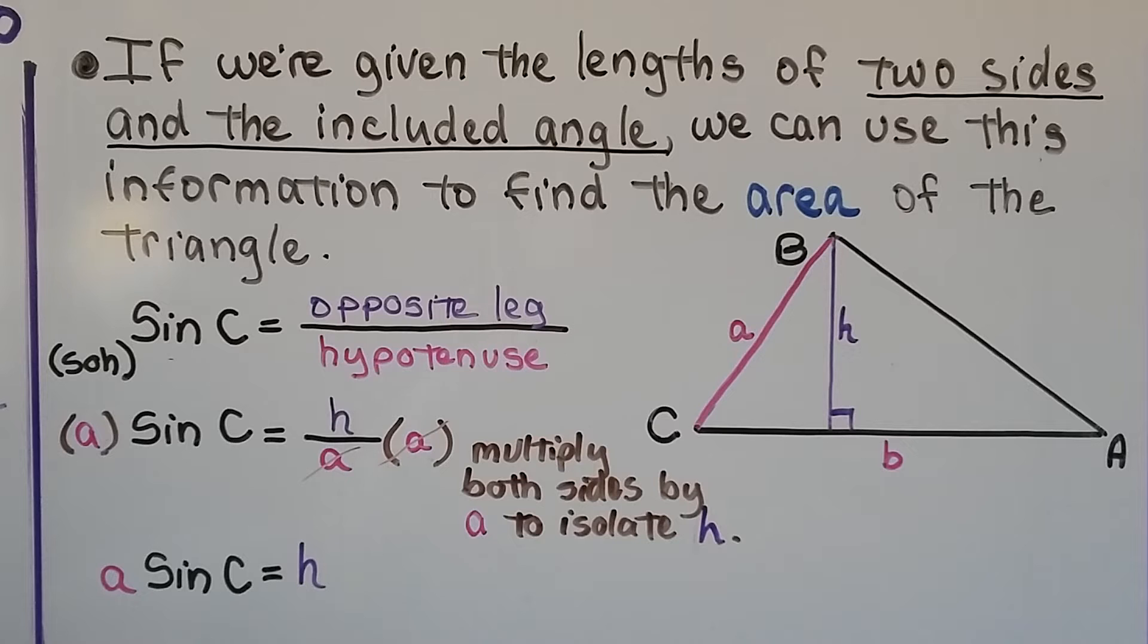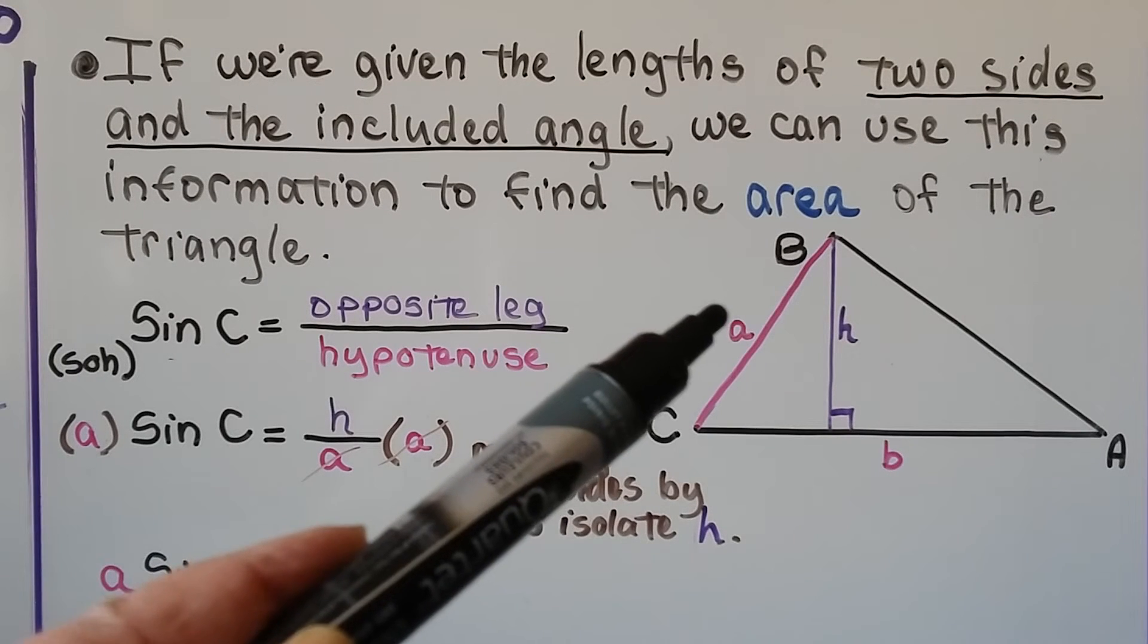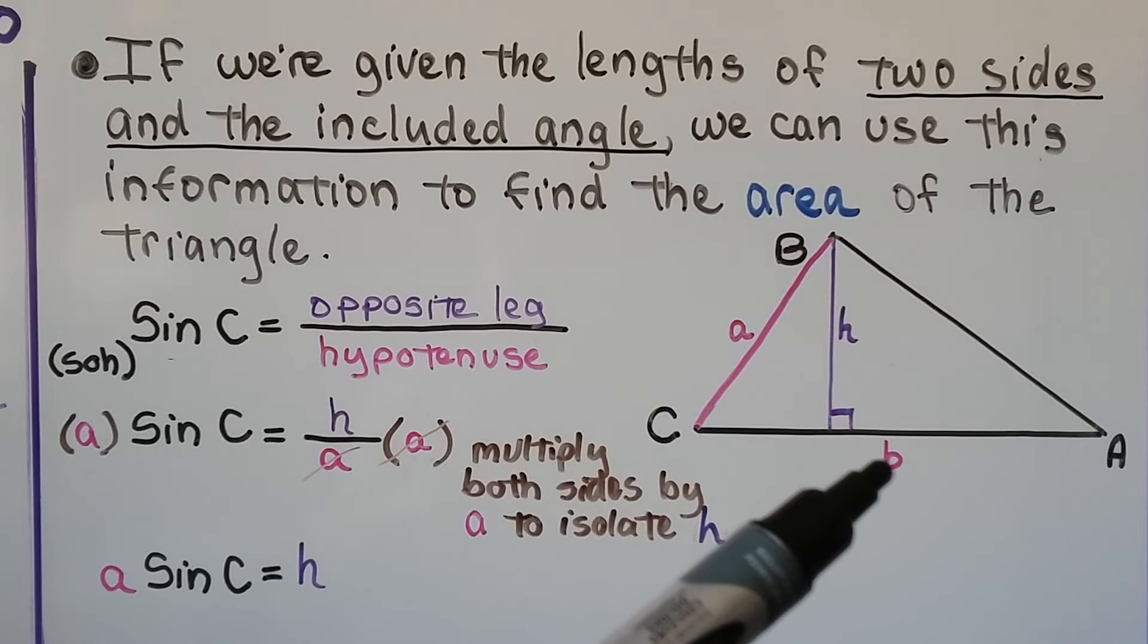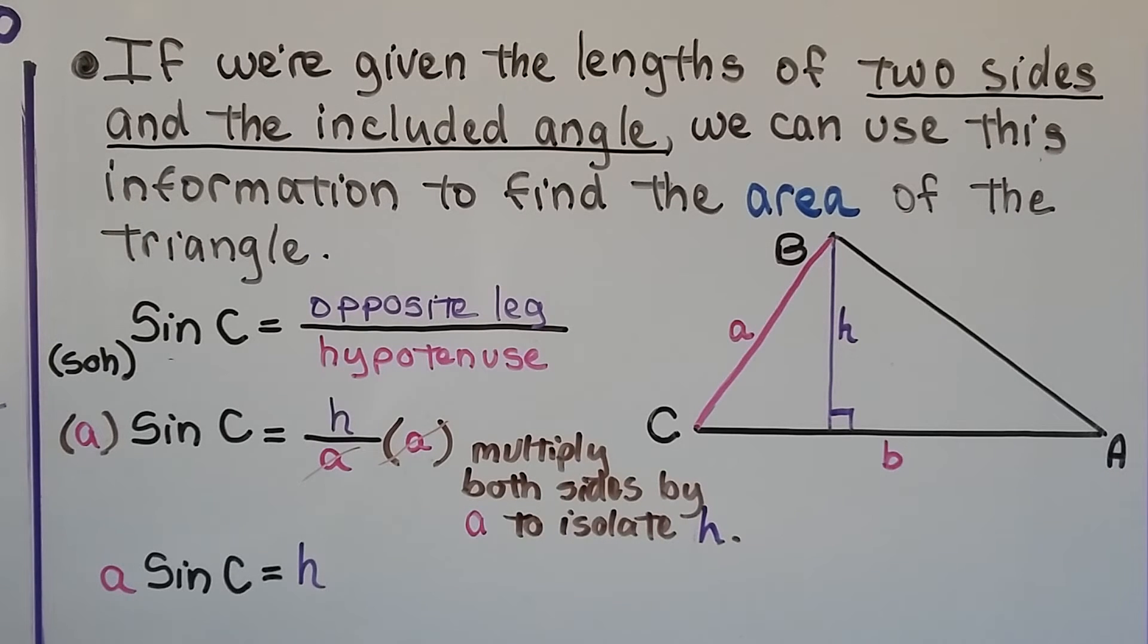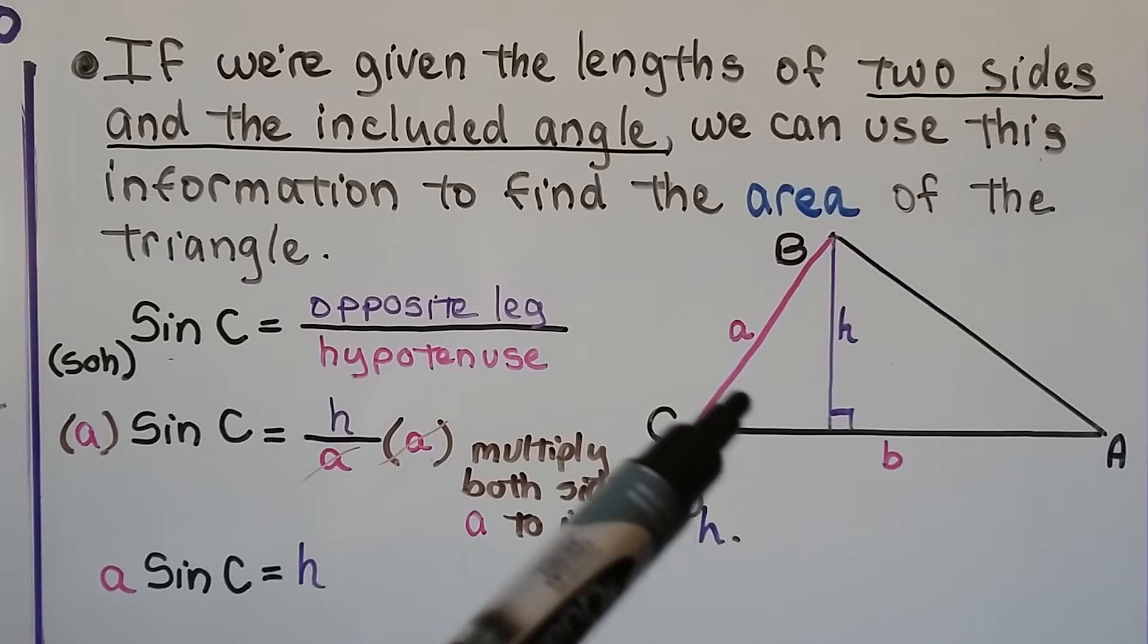If we're given the lengths of two sides and the included angle, we can use this information to find the area of the triangle. So here we have a length that we're going to say is a, a length that we're going to say is b, the lowercase, and we're going to use it to find the area of this triangle, saying that we know what the angle of c is.